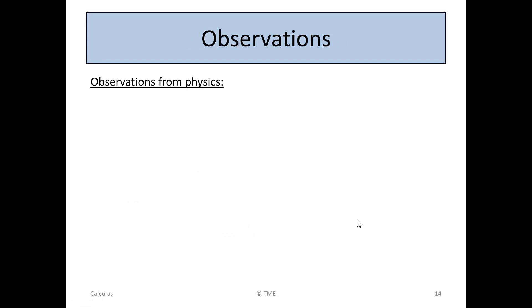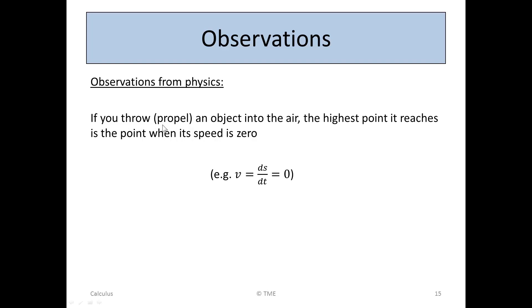There are some observations from physics that are very useful in solving questions. If you propel an object into the air, the highest point it reaches is the point where its speed is zero. Imagine throwing something up — it loses energy and then falls again. At the very top it stops before it falls: it stopped going up and started going down, so its velocity at that point is zero. It's gone from going up to going down, so it must go through zero. So v = ds/dt = 0 at the highest point.